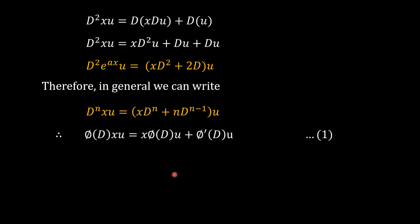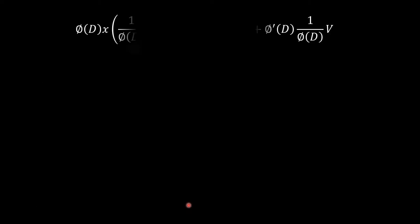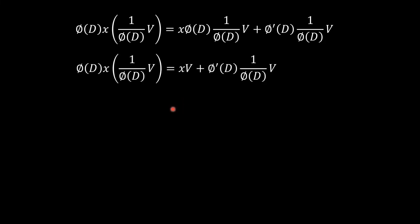Now we want to obtain yp in terms of v. We substitute φ(D)(u) = V, so operating 1/φ(D) on both sides gives u = (1/φ(D))v. In expression (1), replacing u by (1/φ(D))v gives: φ(D)[x·(1/φ(D))v] = xv + φ'(D)·(1/φ(D))v, since φ(D)·(1/φ(D)) cancels.